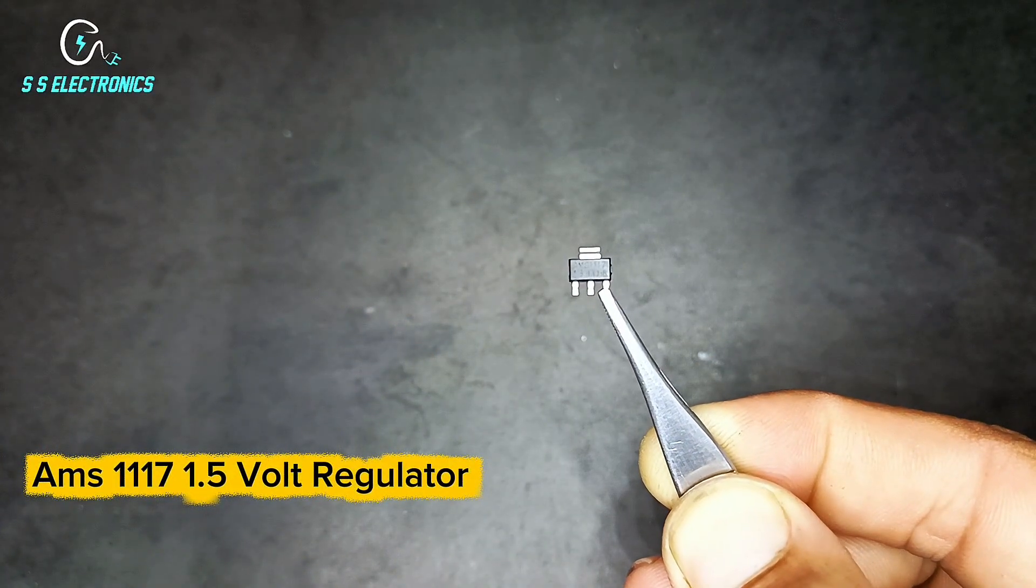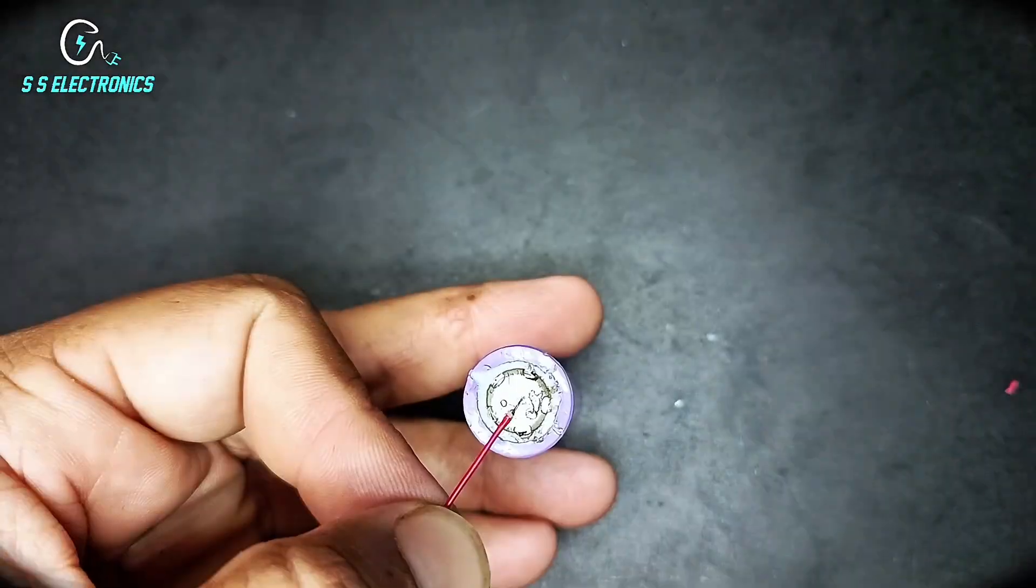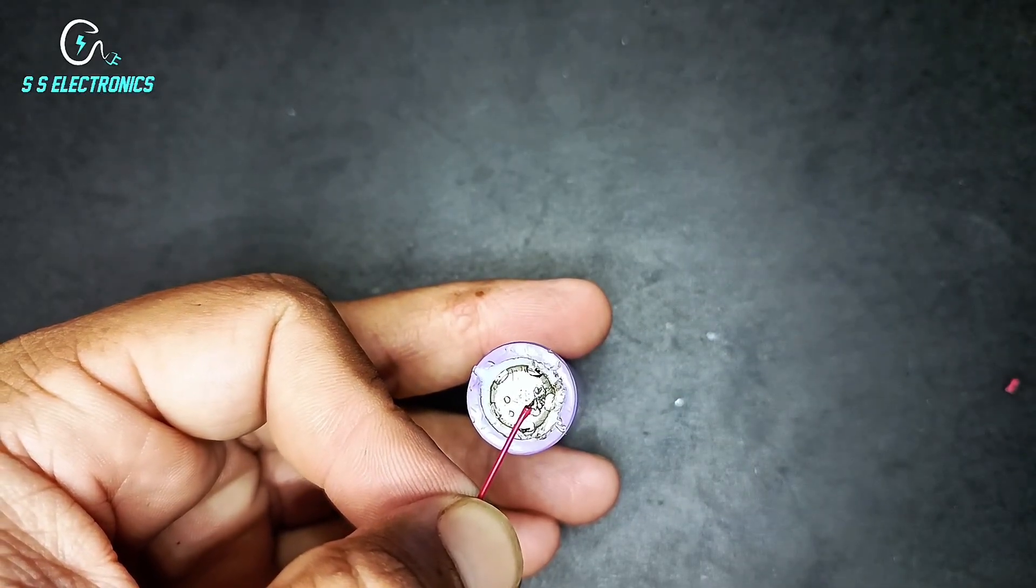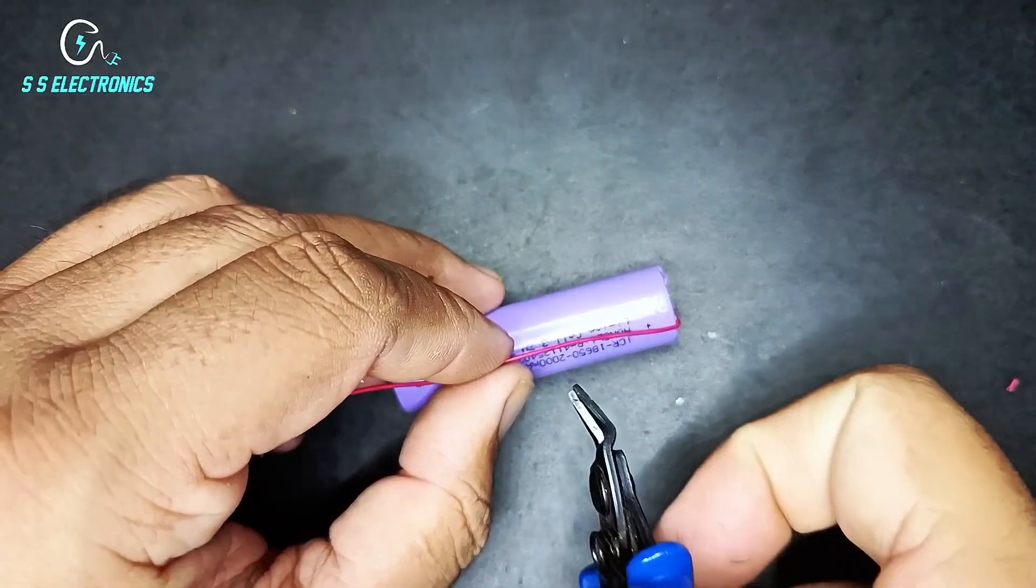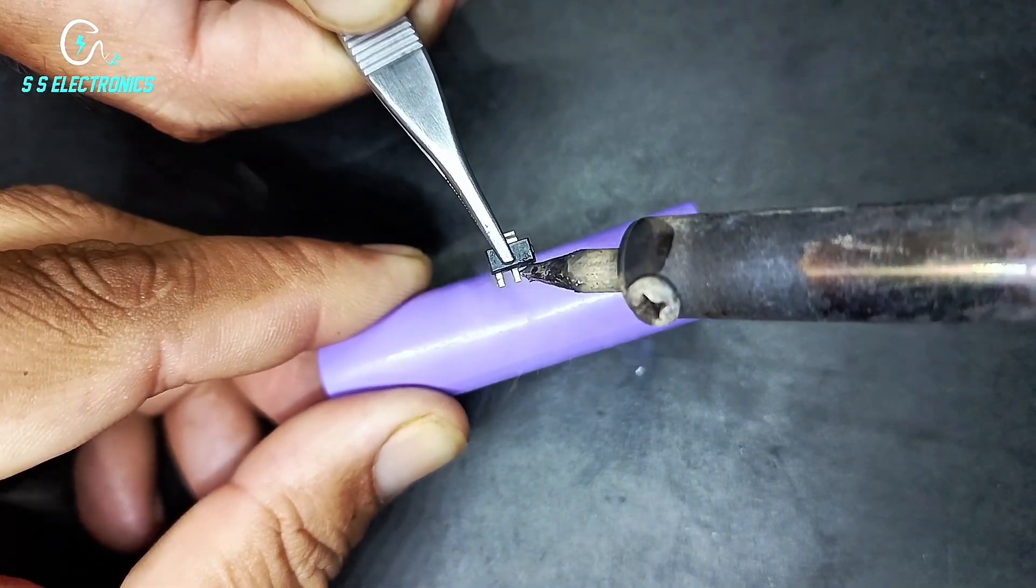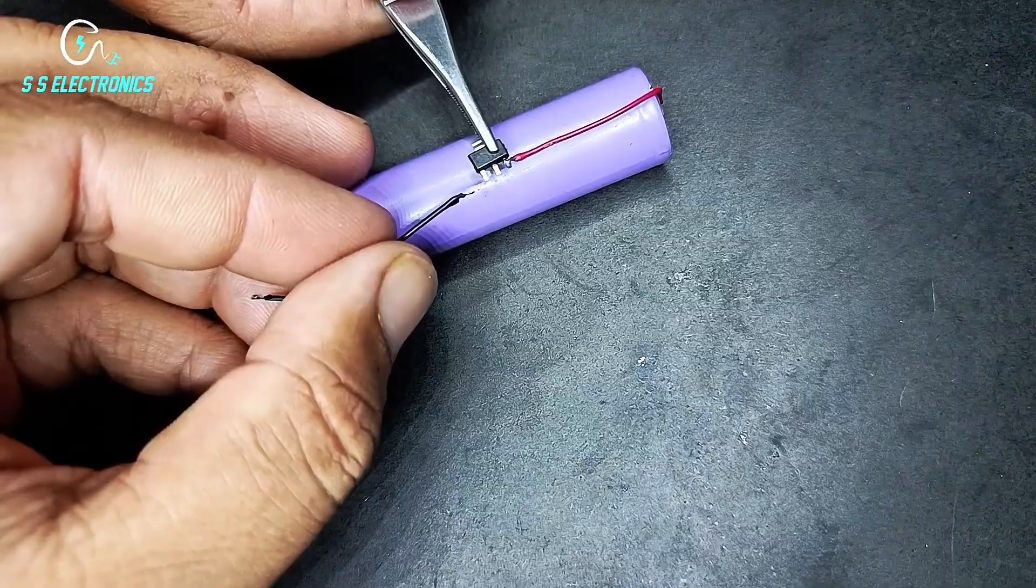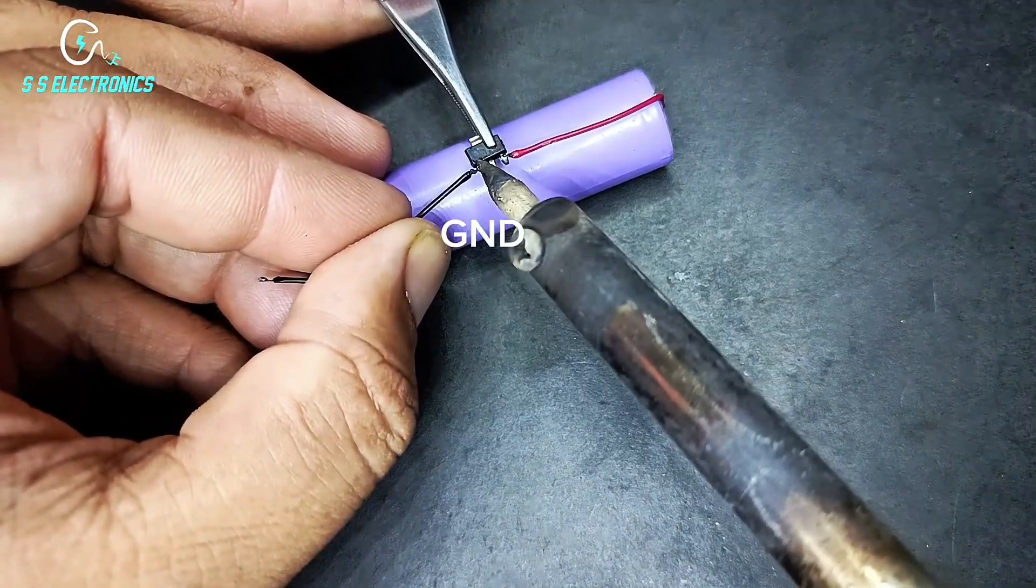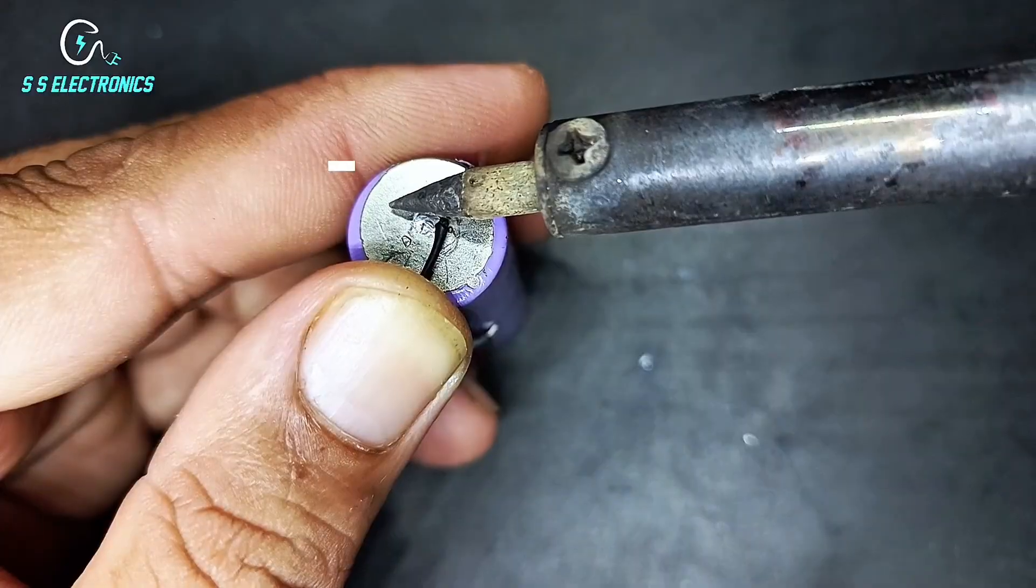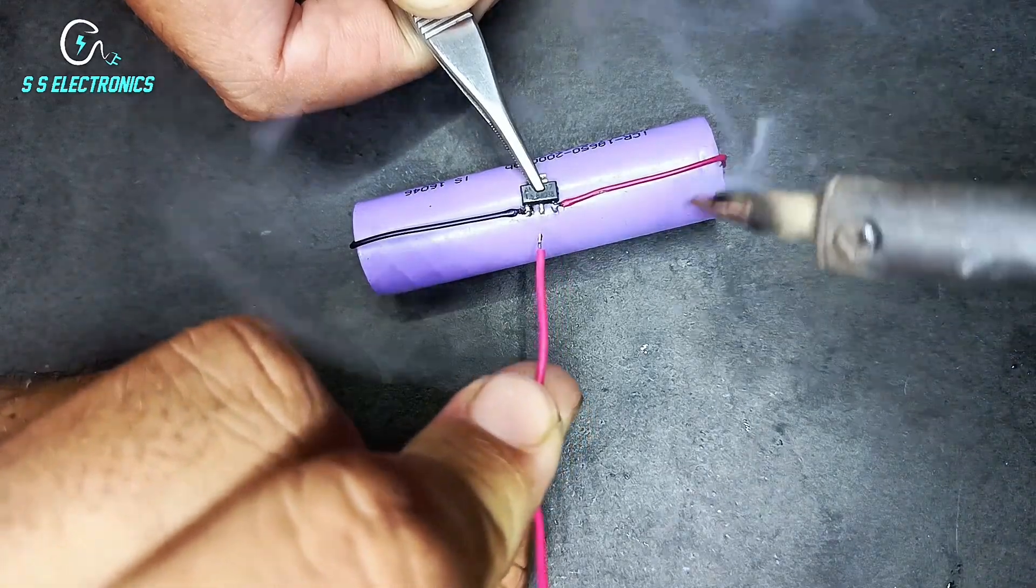1117 1.5 volt regulator, 18650 lithium battery 3.7 volt. Battery positive wire connecting with regulator input pin, negative wire connecting with regulator GND pin. Wire connecting with regulator output pin.